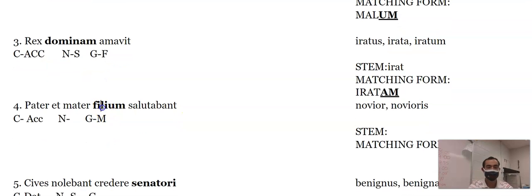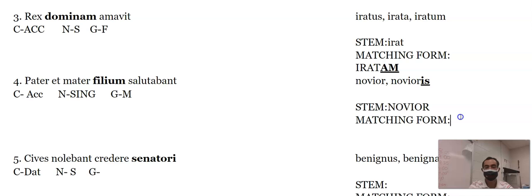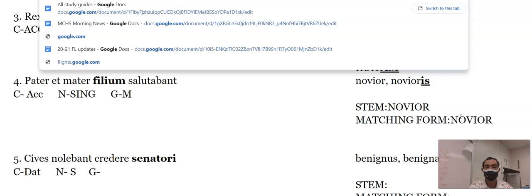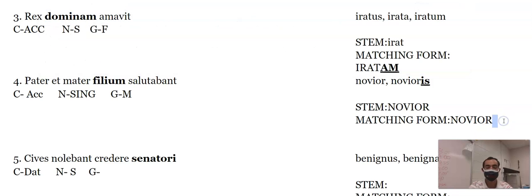Pater et mater, filium. Filium is a son, so the um is singular, accusative, masculine. Novior has an is, so this is our first third declension. Take off the is, and then we use our third declension ending, so noviorem would be our ending.